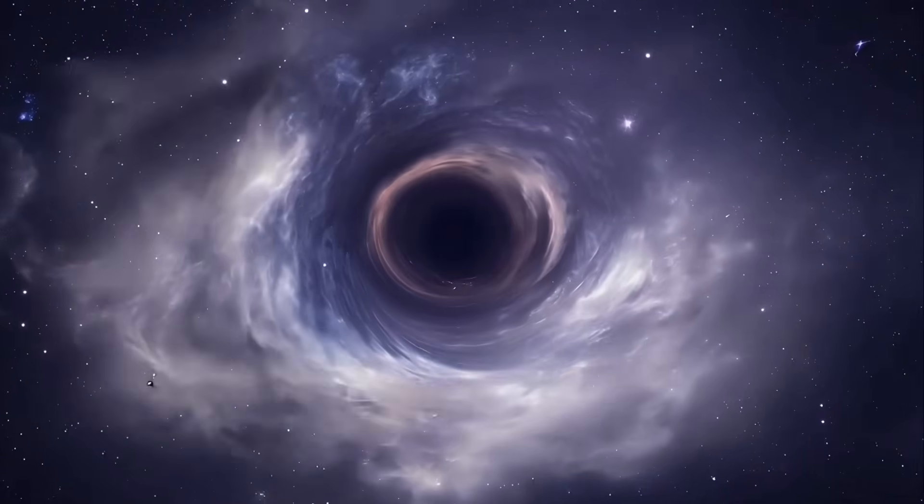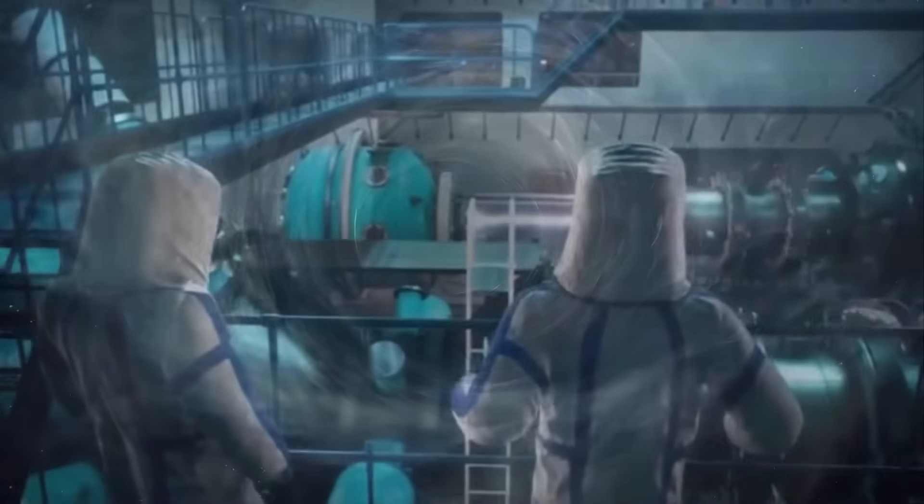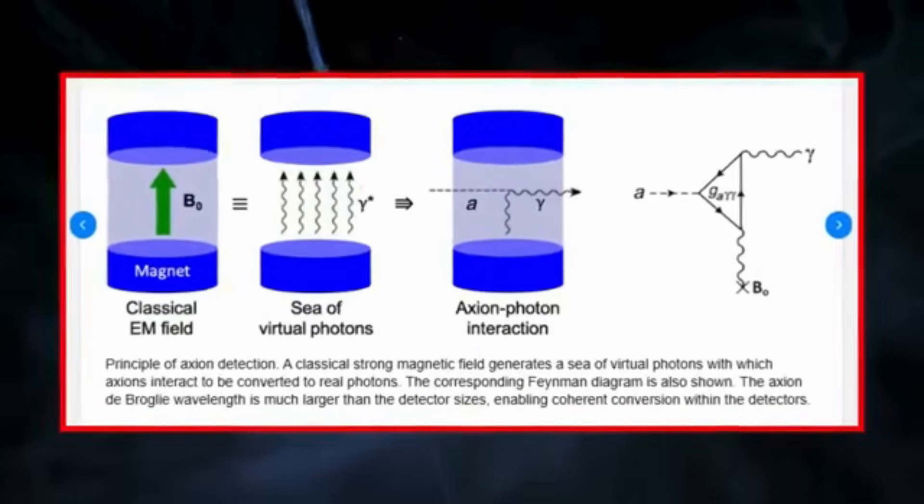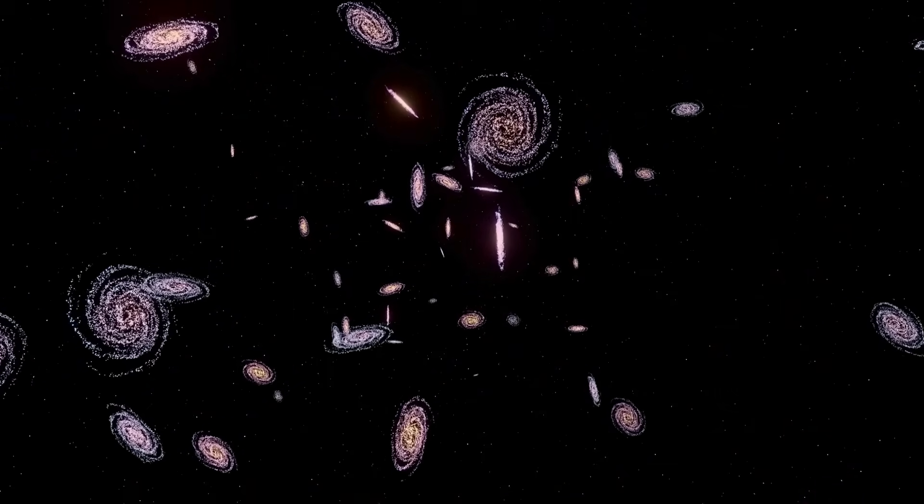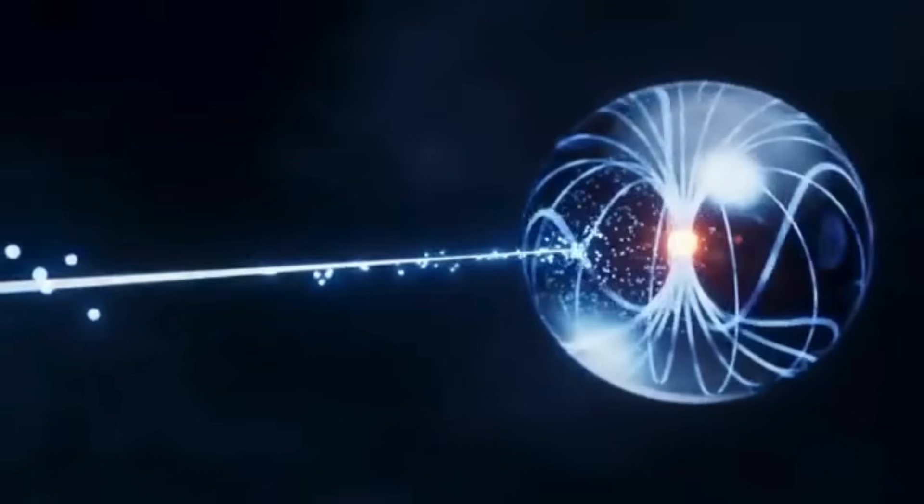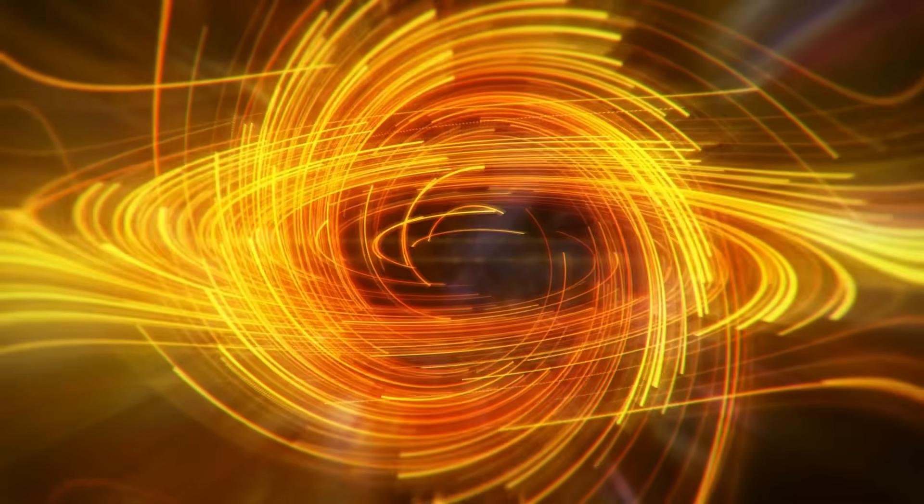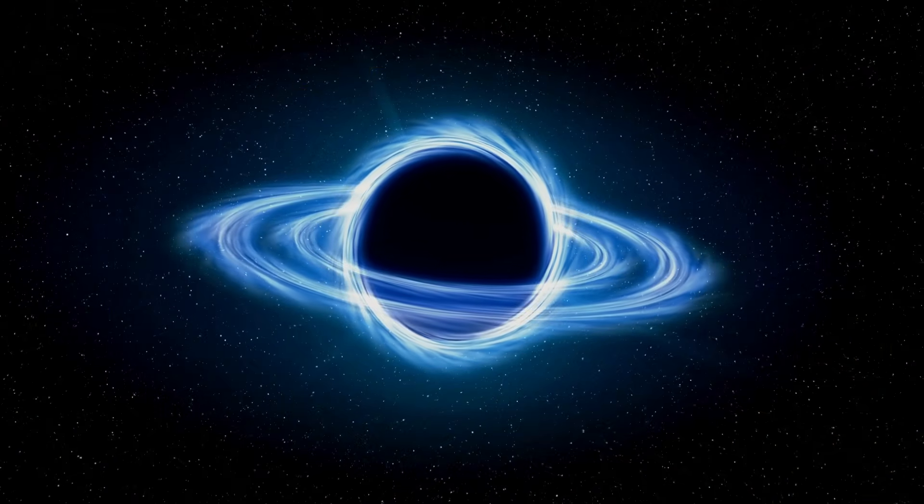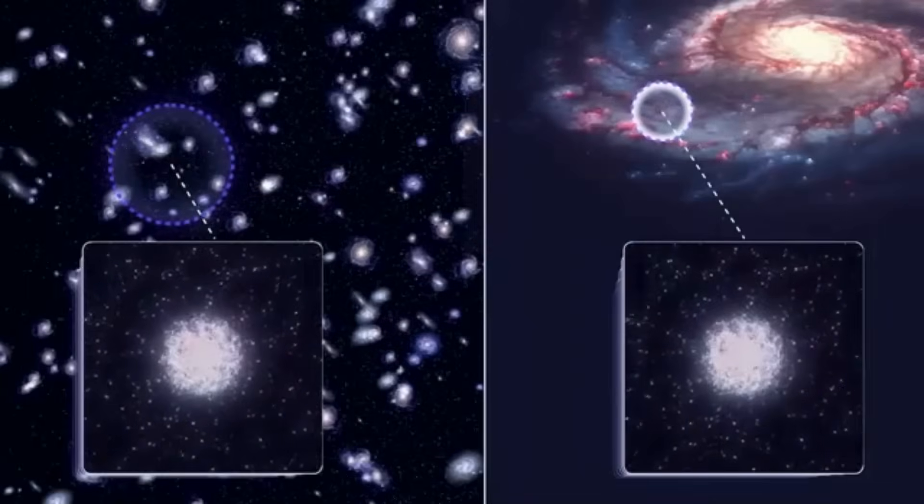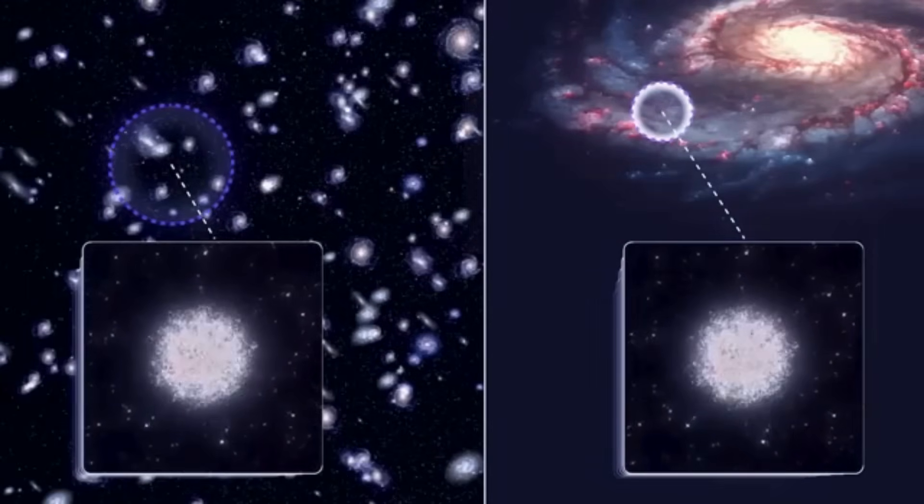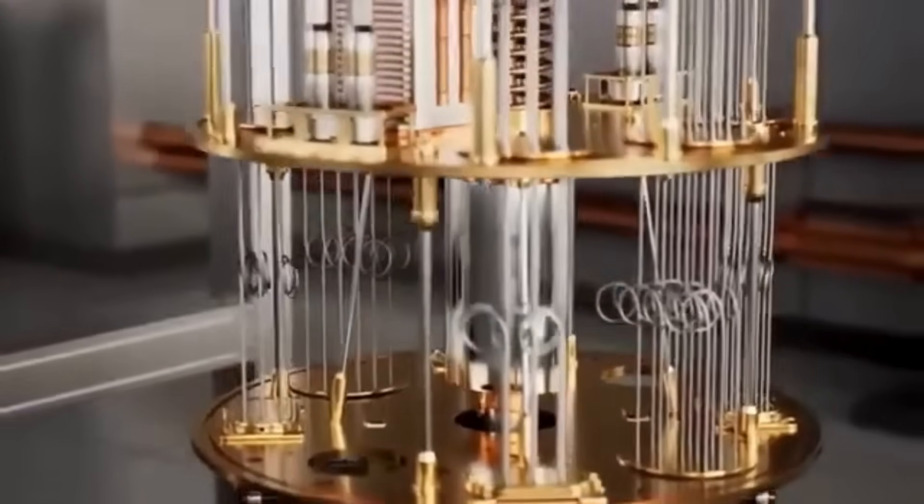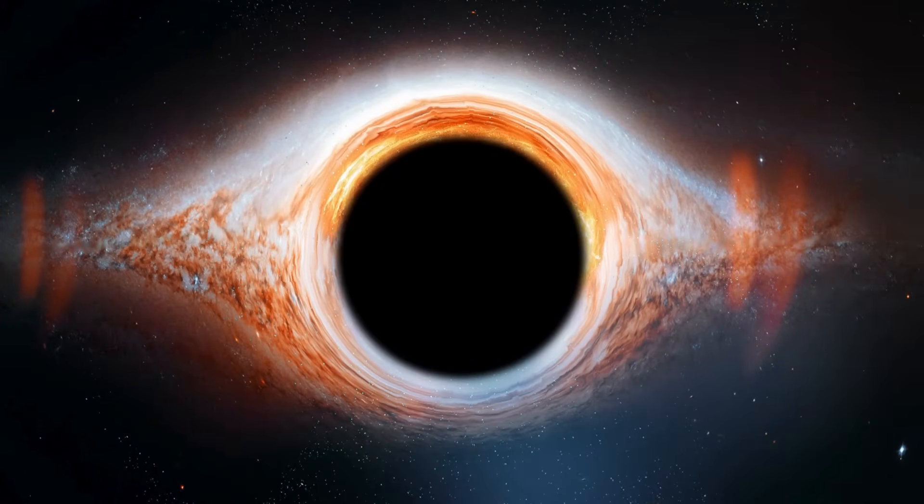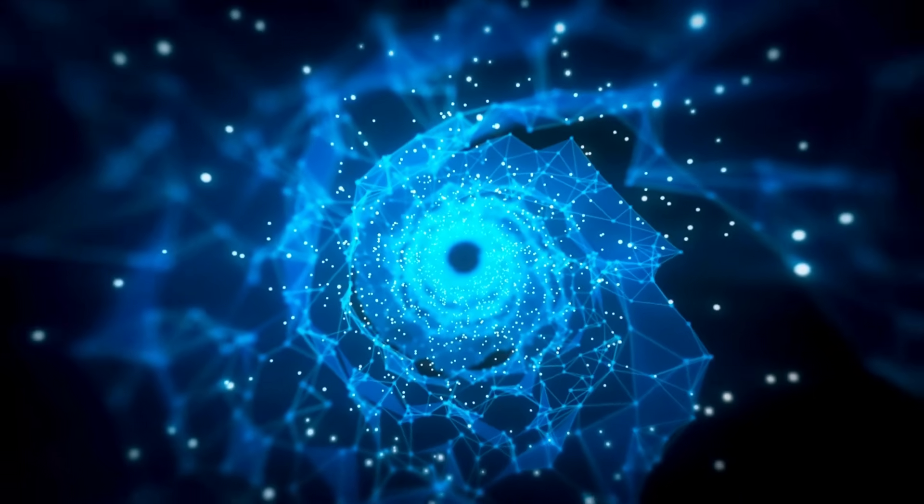The quantum experiments. Searching for axions. In the last few years, several groundbreaking experiments have begun using quantum technology to search for axions in ways that were previously impossible. These projects aim to amplify the incredibly weak signals that axions are expected to produce, bringing us closer than ever to proving their existence. One of the most promising approaches comes from quantum non-demolition experiments. Unlike traditional detection methods, which often destroy particles in the process of measuring them, quantum non-demolition techniques allow scientists to observe axion-induced effects without interfering with them. This means researchers can repeatedly measure the same system, increasing their chances of detecting an axion's subtle influence.